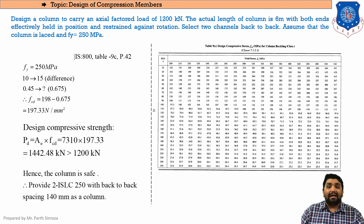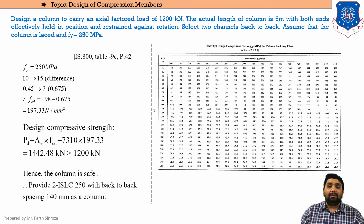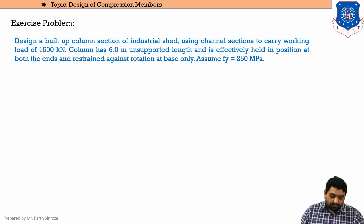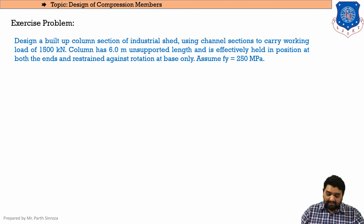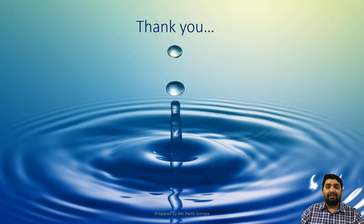This completes the design of compound sections. For other compound sections the method is identical; only the steel table page and radius of gyration values will differ. This is the last exercise problem of the chapter on design of compression members. From the next session, a new chapter begins. Thank you.